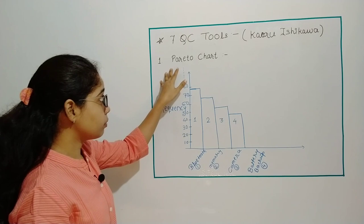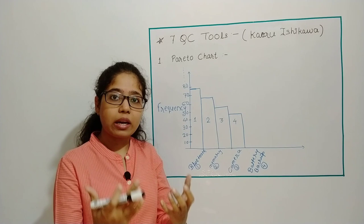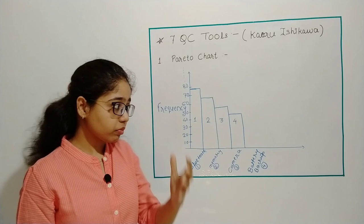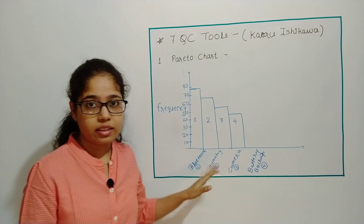Now in that, first is Pareto chart. To implement Pareto chart, suppose I have launched a mobile in the market and I will collect the customer feedback. After collecting customer feedback, I found that the cumulative frequency of any defect, like Bluetooth, memory, camera, and battery backup - these are the four defects in the phone I launched. I received this from feedback.